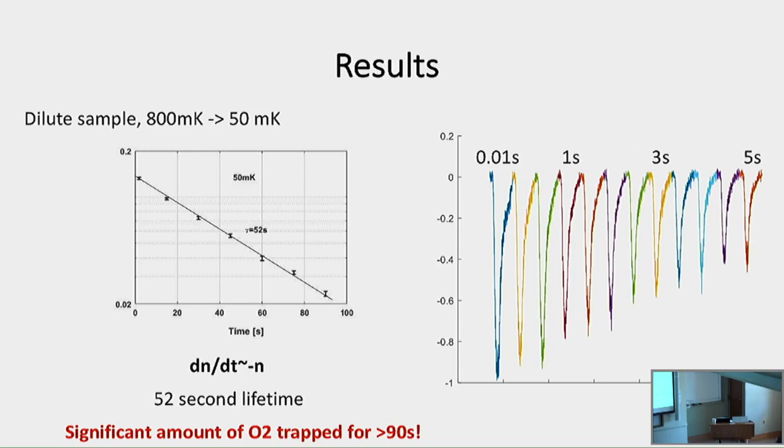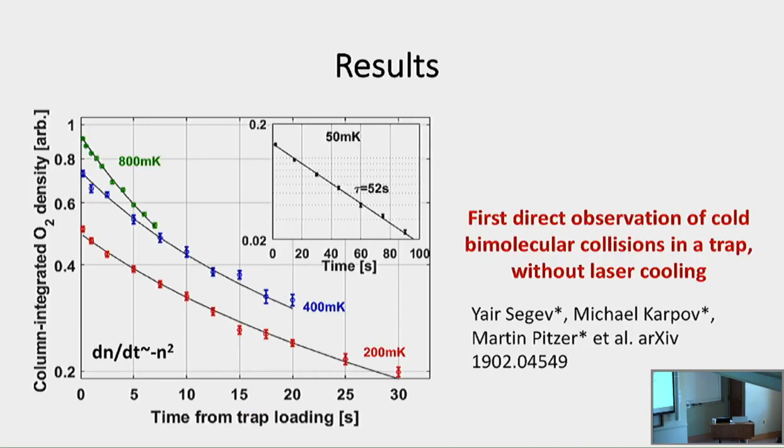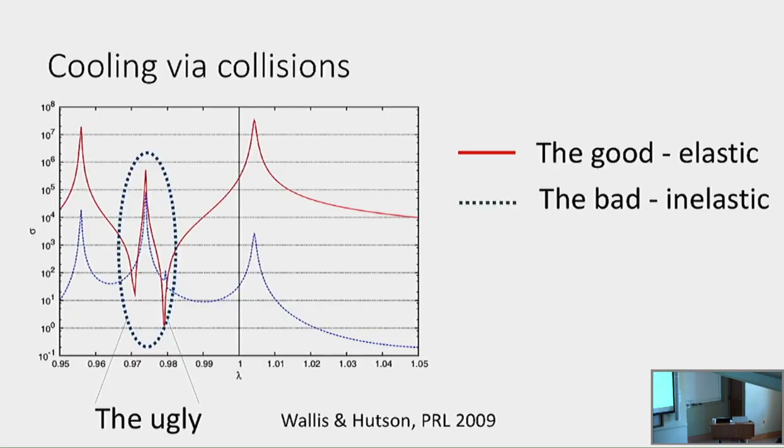But this is a beautiful exponent. Now let's go to denser samples. Eventually we reach 800 millikelvin, and the picture becomes completely different. You see that your signal decays faster and faster when you go to denser and denser samples of O2. If you look at the fit, it's a beautiful fit to two-body collisions. So finally, we really see direct observation of cold biomolecular collisions in a trap without any laser cooling.